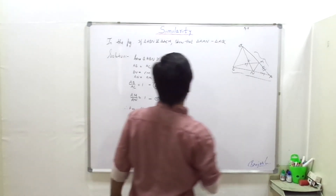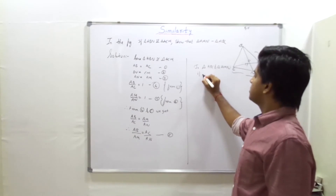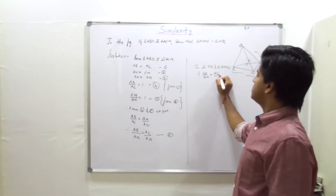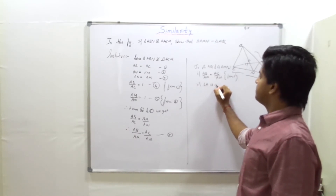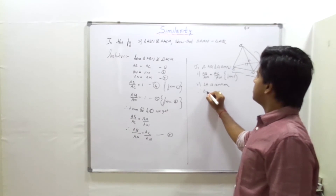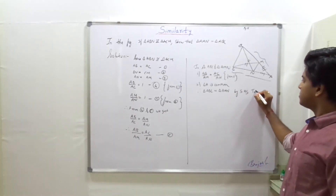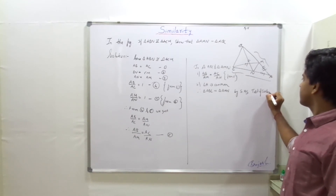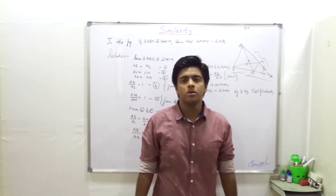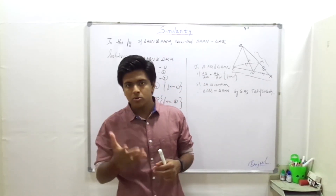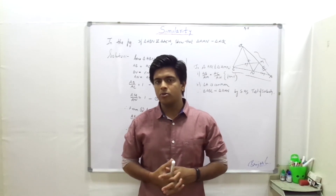Now I will use this in triangle AVC and triangle AMN. AV upon AM is equal to AC upon AN, and angle A is common. So triangle ABC is similar to triangle AMN by the SAS test of similarity. I hope you can understand. Keep watching and keep sharing this video and my channel. Thanks a lot for watching. Bye bye.